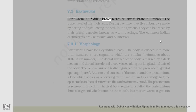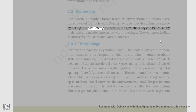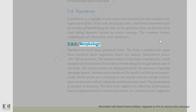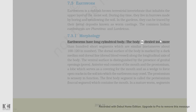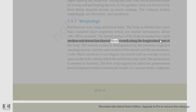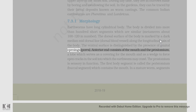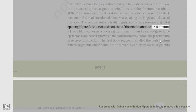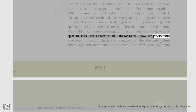Earthworm is a reddish-brown terrestrial invertebrate that inhabits the upper layer of moist soil. During daytime, they live in burrows made by boring and swallowing the soil. In gardens, they can be traced by their faecal deposits known as worm castings. The common Indian earthworms are Pheretima and Lumbricus. Earthworms have a long cylindrical body divided into more than 100 short segments, called metameres (about 100 to 120 in number). The dorsal surface of the body is marked by a dark median mid-dorsal line (dorsal blood vessel) along the longitudinal axis of the body. The ventral surface is distinguished by the presence of genital openings or pores. The anterior end consists of the mouth and the prostomium, a lobe which serves as a covering for the mouth and as a wedge to force open cracks in the soil. The prostomium is sensory in function.